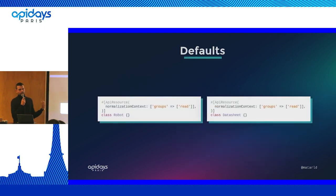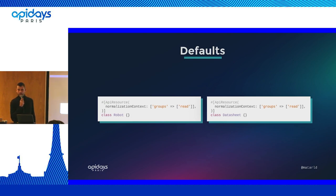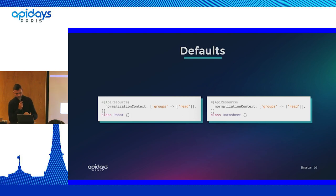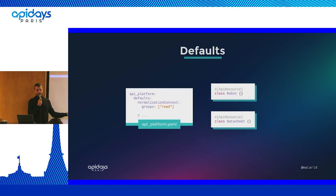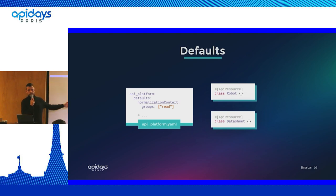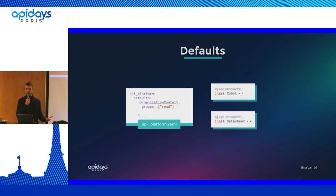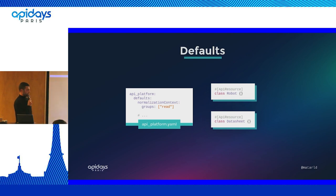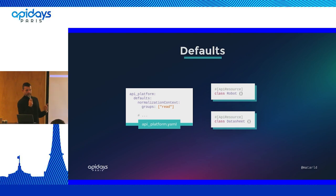It's a little cleaner but we're still repeating ourselves for each resource. That's why we're going to use API platform's default resource configuration. We edit the api_platform.yml configuration file and set the groups under the normalization context key of the defaults section. What is set there will be applied by default on each resource if not overridden. This lets us write naked API resource PHP attributes. The defaults section also works for access control, pagination, and so on.